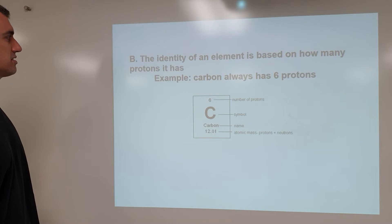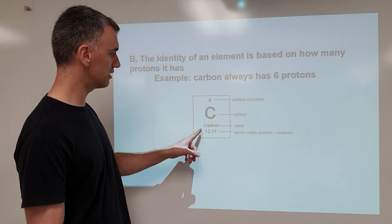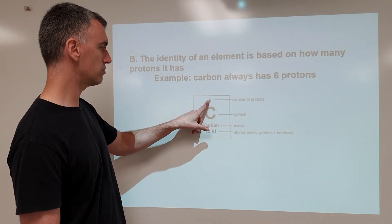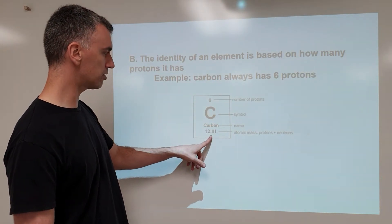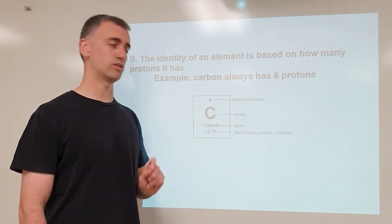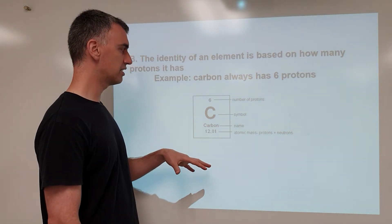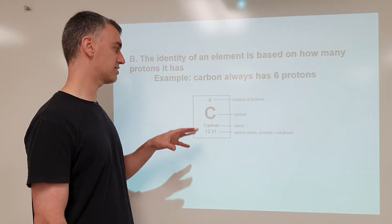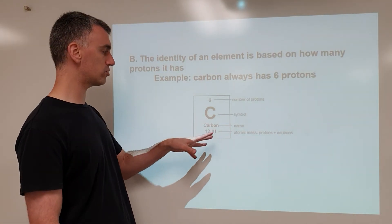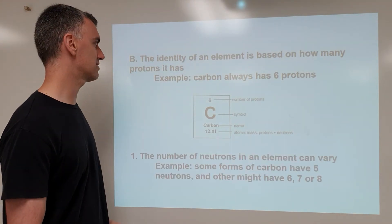The identity of an element is based on how many protons it has. So when you look at an element on the periodic table and you see the number of protons, that tells you what it is. You can change the number of neutrons, you can change the number of electrons, but if it has six protons, it's always a carbon. If it has five protons, it is a boron. If it has seven protons, it is a nitrogen. And no matter what you do to the number of neutrons or electrons, the protons determine what it is.